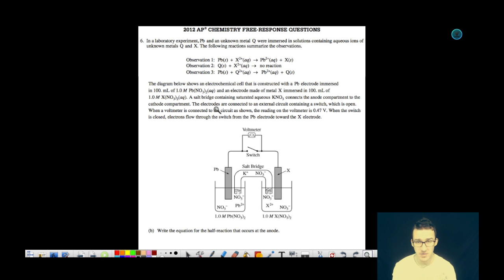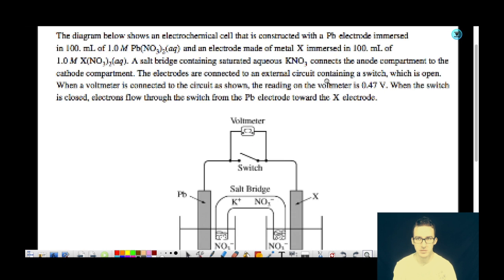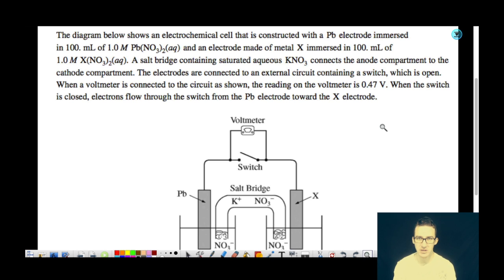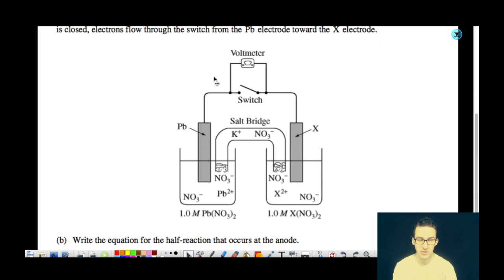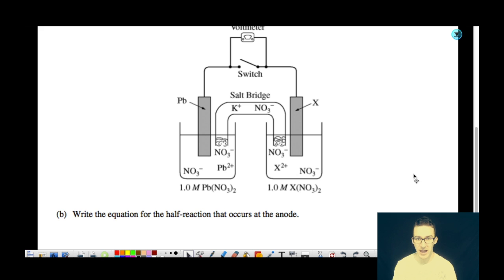So that was just warming us up for the rest of this question. The diagram below shows an electrochemical cell that is constructed with a lead electrode immersed in 100 milliliters of 1.0 molar lead nitrate solution and an electrode made of metal X immersed in 100 milliliters of 1.0 molar X nitrate aqueous solution. A salt bridge containing saturated aqueous potassium nitrate connects the anode compartment to the cathode compartment. The electrodes are connected to an external circuit containing a switch, which is open. When a voltmeter is connected to the circuit as shown, the reading on the voltmeter is 0.47 volts. When the switch is closed, electrons flow through the switch from the lead electrode towards the X electrode. Here's a picture of our voltaic cell. We are asked to write the equation for the half reaction that occurs at the anode.